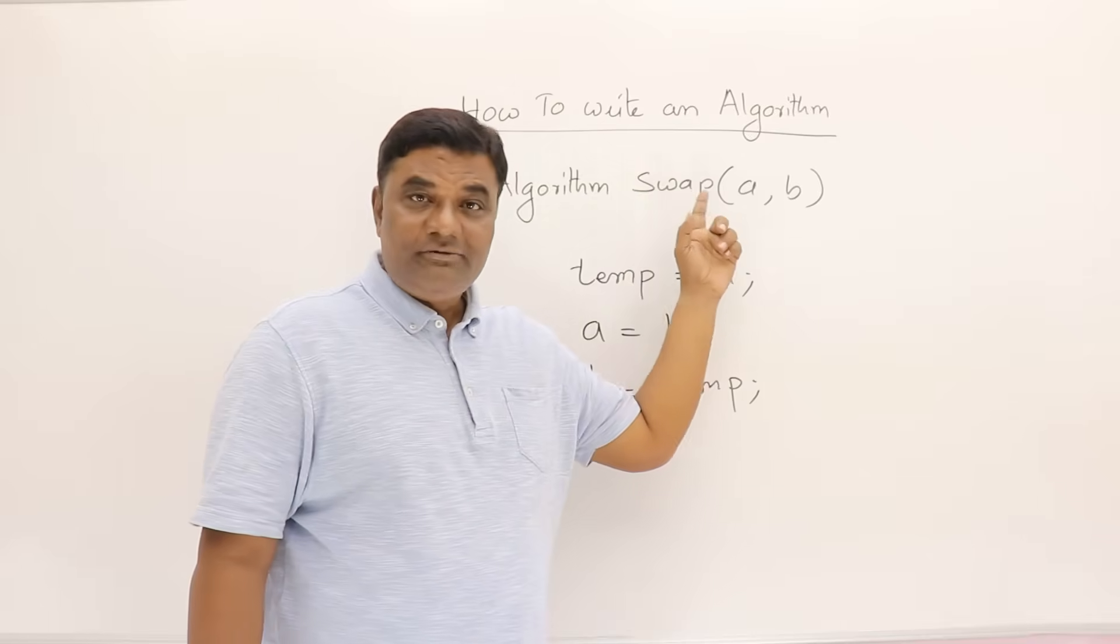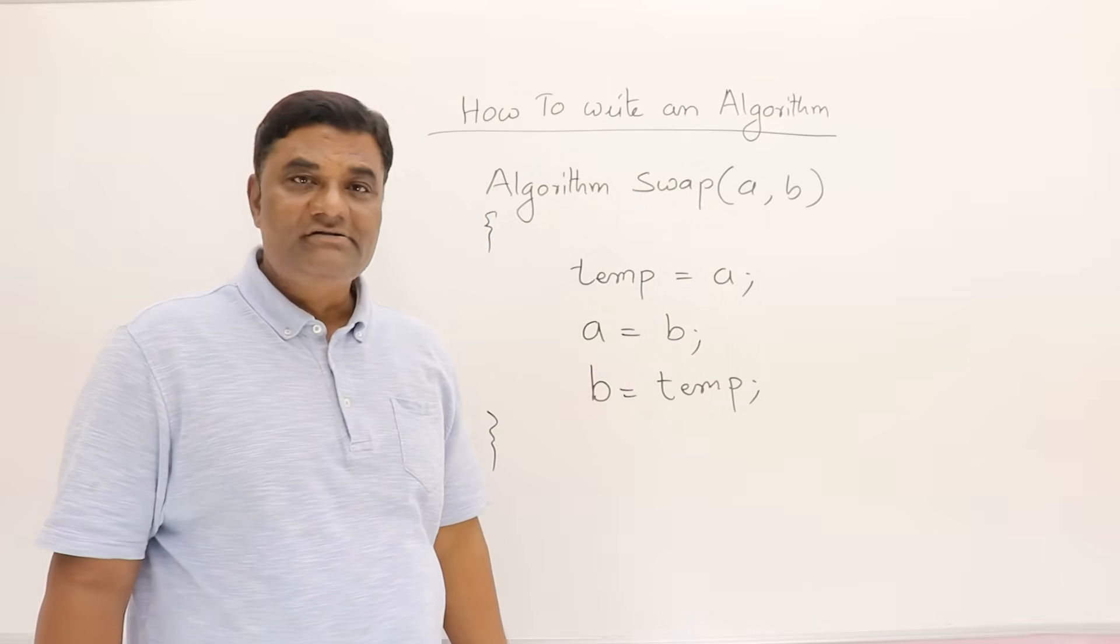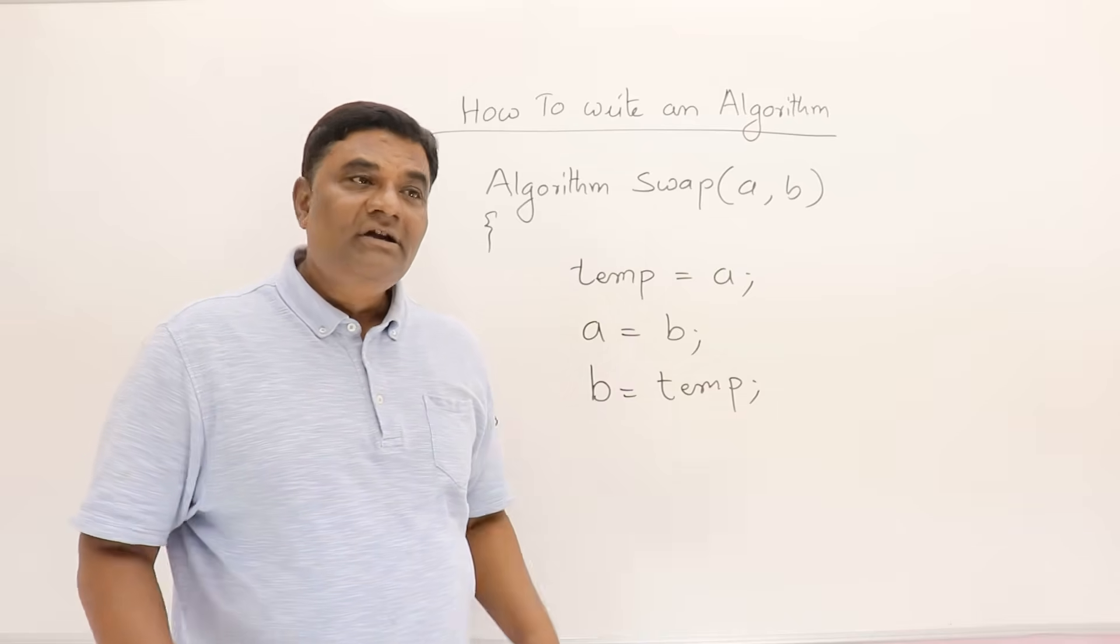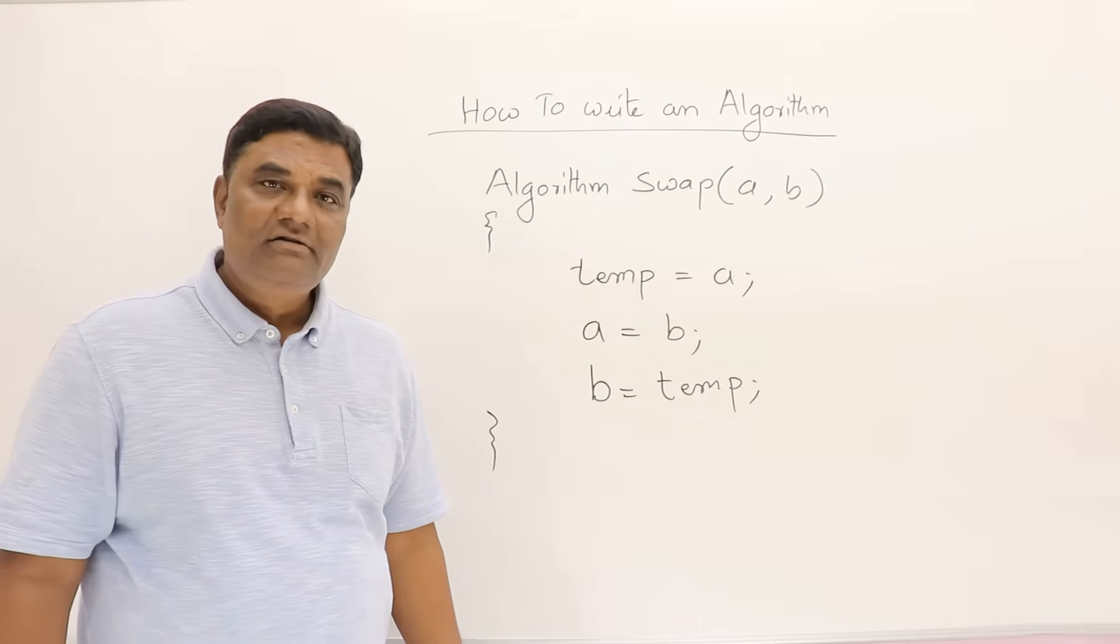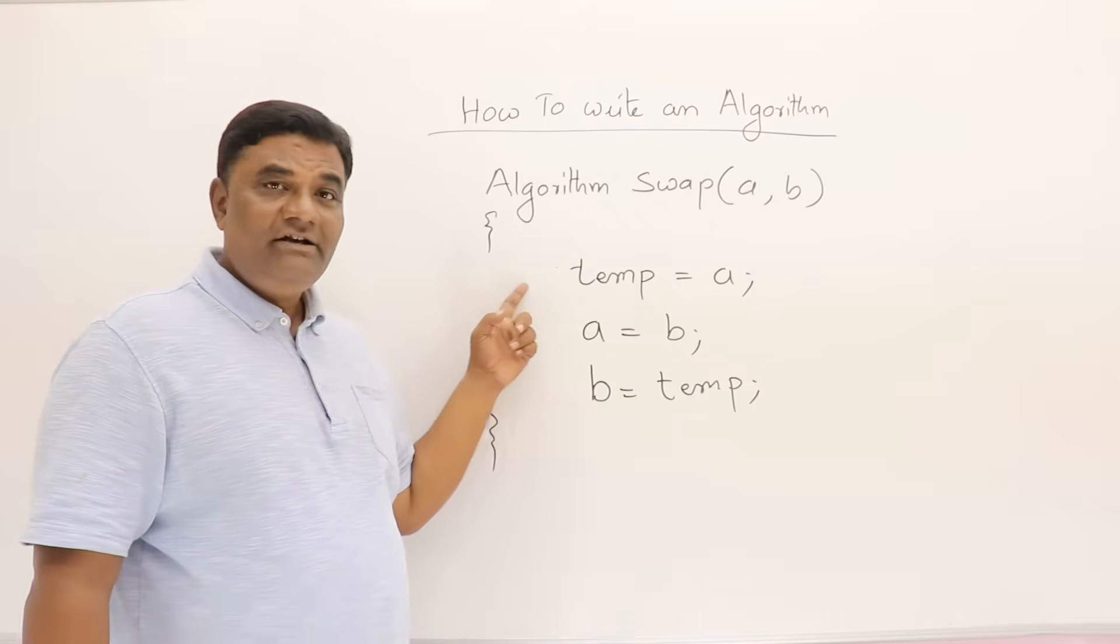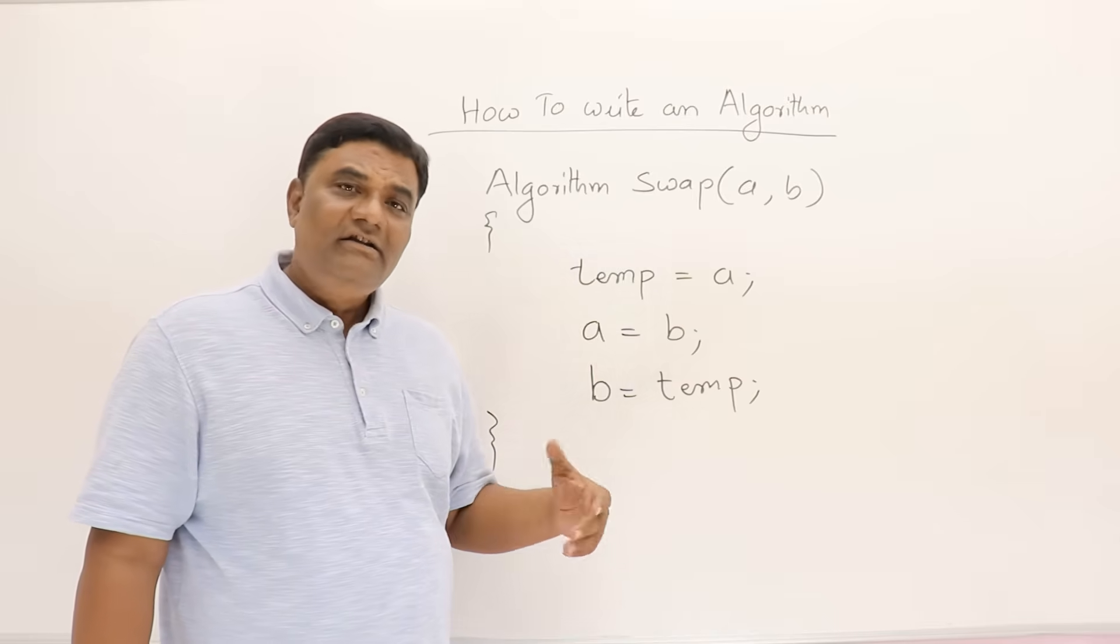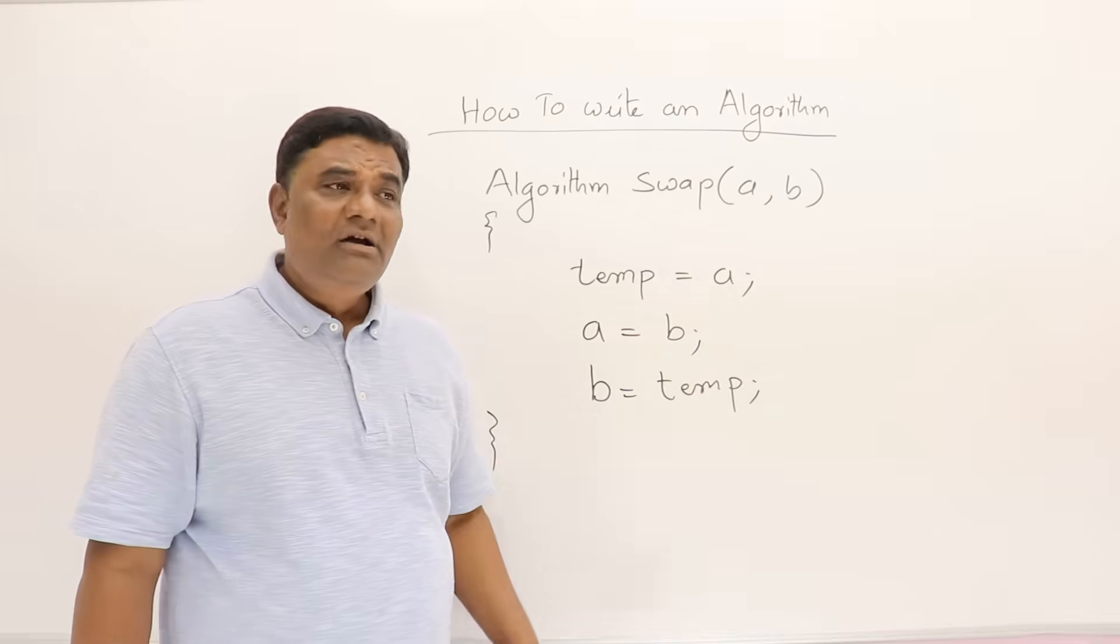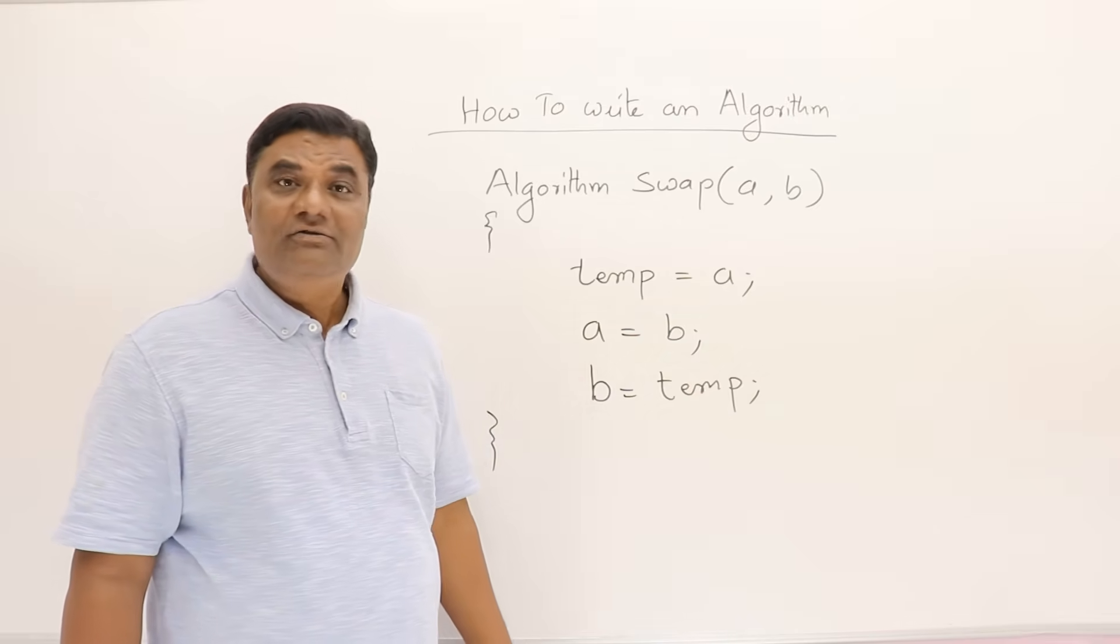If we compare with a C program, here I have not written the data type of parameters. Data types we don't decide at algorithm time. When we write a program, then we decide what data types are required. Here I don't have a temporary variable declaration either. Declaration is not there; directly it is used. In algorithm, we don't bother about those minor things that are related to language.